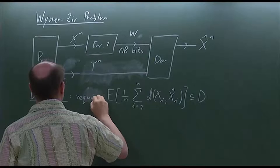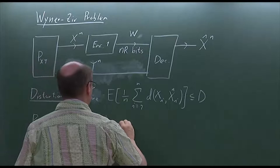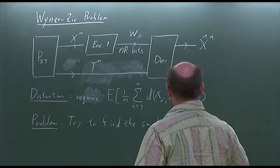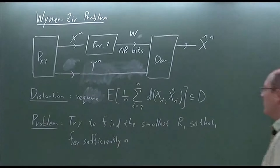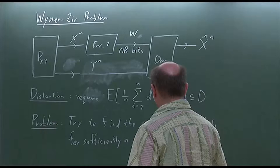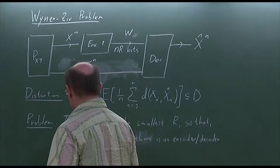So the problem is to find the smallest r — the best compression — so that for sufficiently large n, we're not including delay as a problem, there is an encoder and decoder satisfying the distortion constraint.